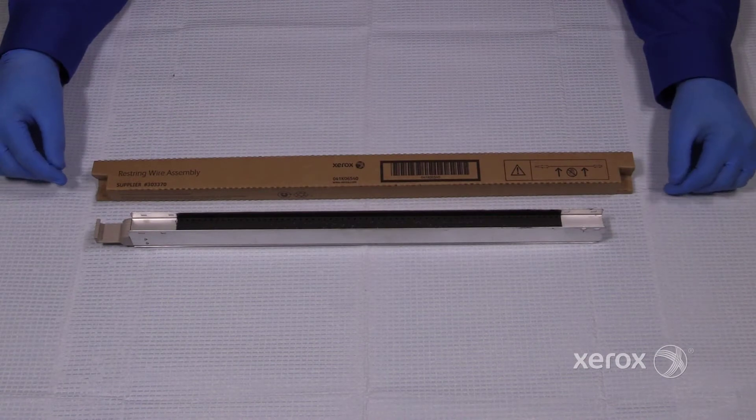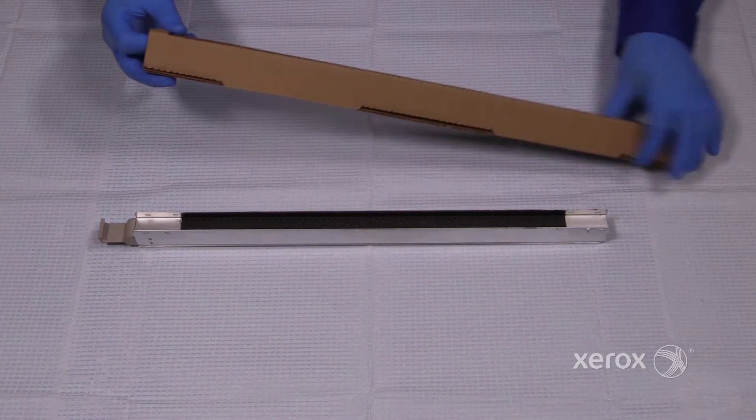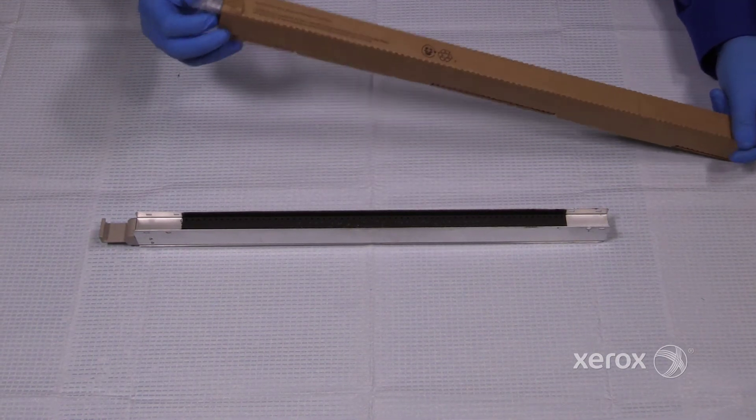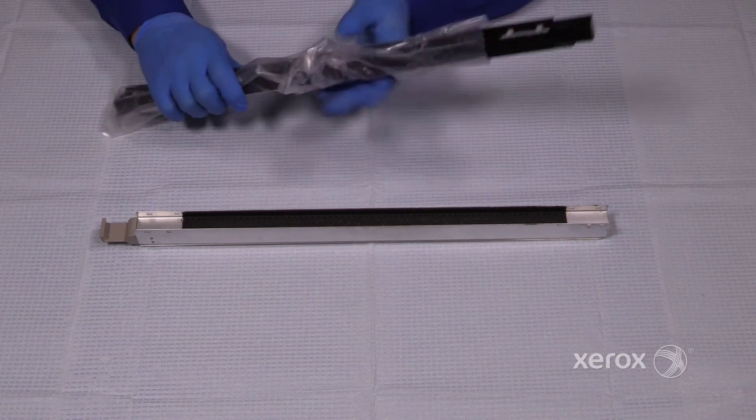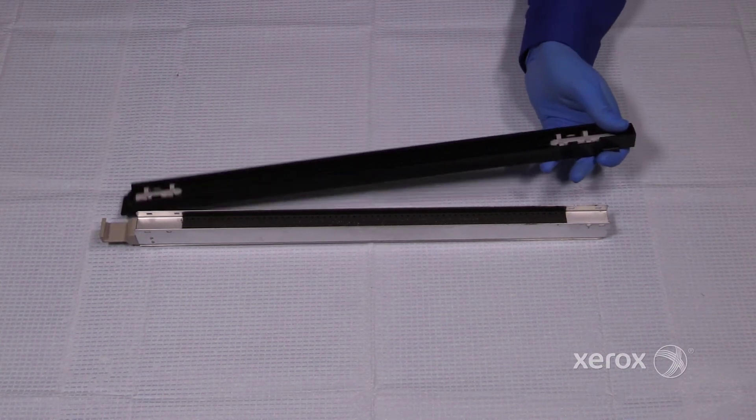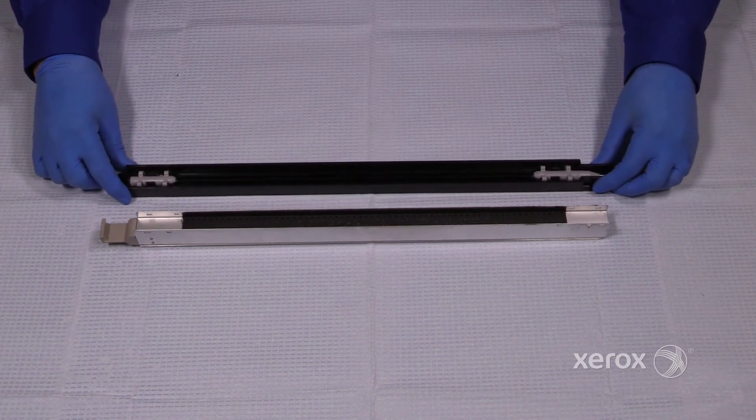Restringing the wire assembly. You'll need your wire assembly kit. Remove the restring kit from the box, and then remove the restring kit from the plastic bag. Set your restring kit on a flat surface.